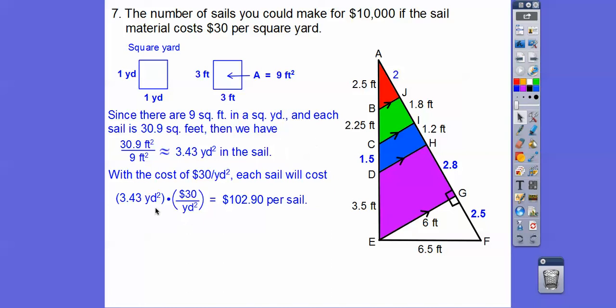So we're going to divide that into our $10,000 that we're going to spend, and we get about 97.2. So how many sails can we make? We can make at most 97 sails. I hope that makes sense. Take care.